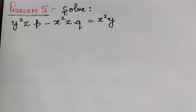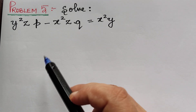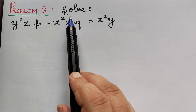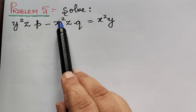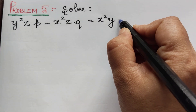Dear students, under the topic Lagrange's linear partial differential equation, we are solving problems under the method of grouping. So far we have completed problems 1 to 4, and now here we have problem 5: solve y²z·p minus x²z·q is equal to x²y.